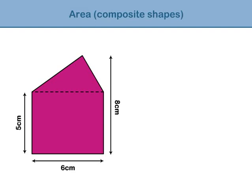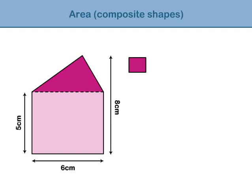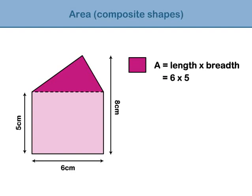First, find the area of the rectangle. Use the formula: area equals length times breadth. Substitute the length and breadth into the formula, which gives us 6 times 5, which equals 30 centimetres squared.